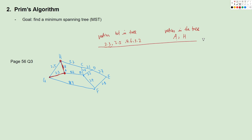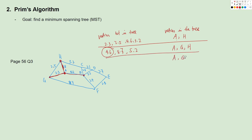Now we have A, G, H in the tree. We look at the edges connecting vertices not in the tree with A, G, or H. From A, we have BA at 4.6. From G, we have GF at 8.7. From H, we have CH at 5.2. We choose the smallest, which is 4.6, so we connect B to A. Now we have A, B, G, H in the tree.